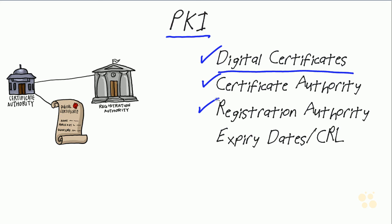That digital certificate is shared with anyone and everyone that we're using for communications, and the validation is through the CA and the RA. Last thing as a CISA auditor we need to be aware of is the expiry dates or the CRL.